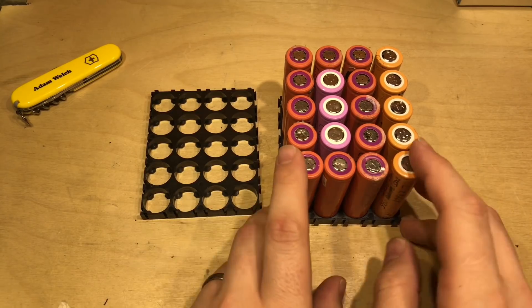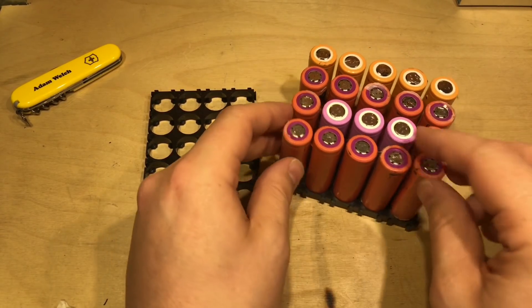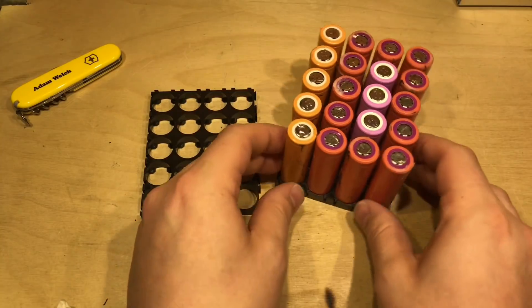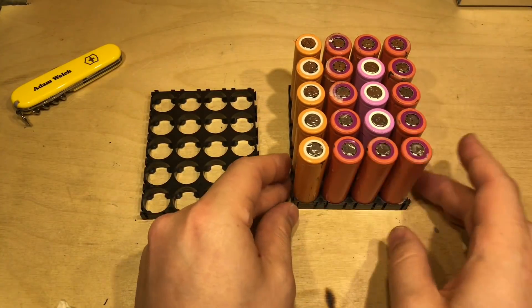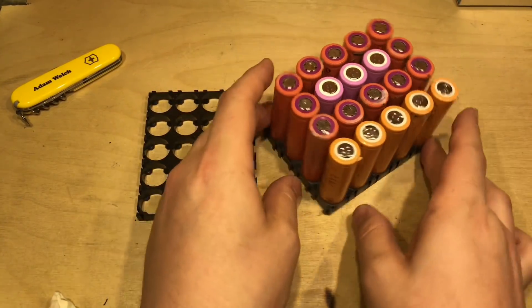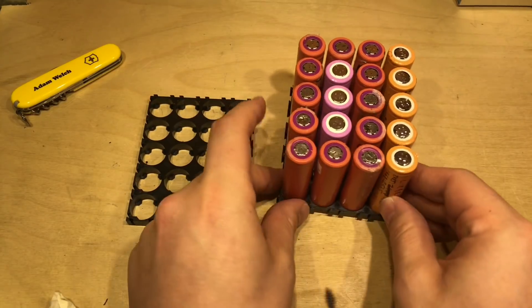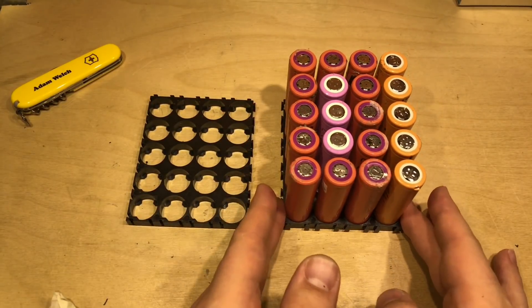There we have it, all 20 moved across. I'll just tidy these up a little bit so at least on the outside of the pack it looks reasonably neat. I've not done a bad job there, but why these 20?